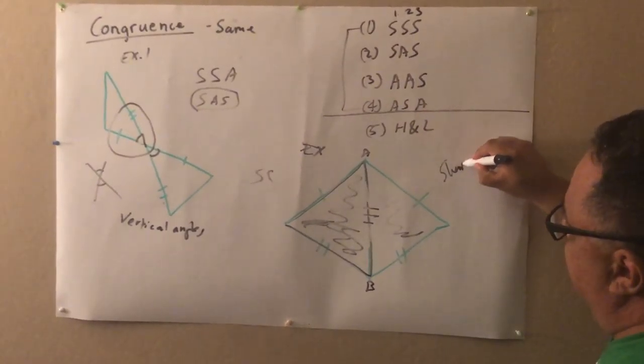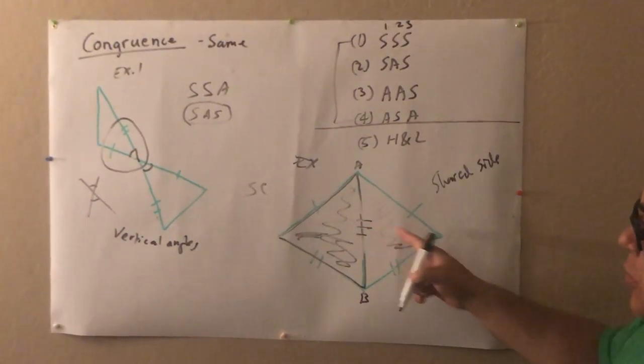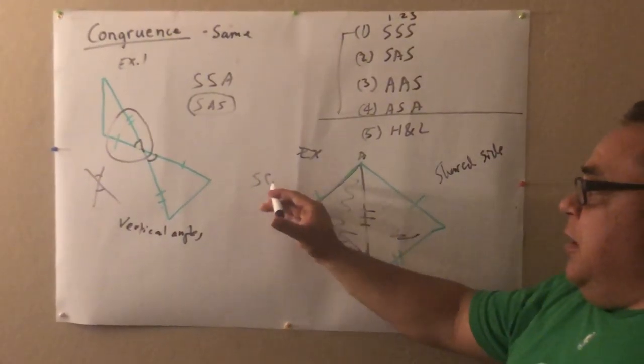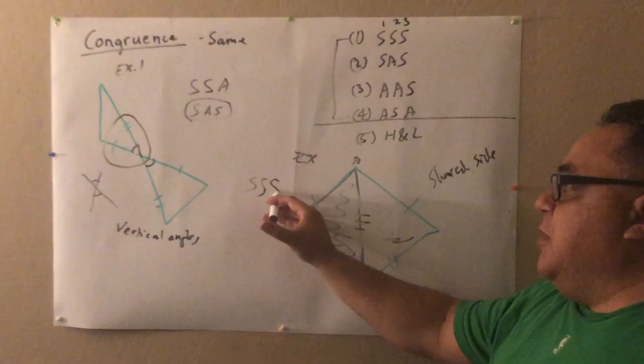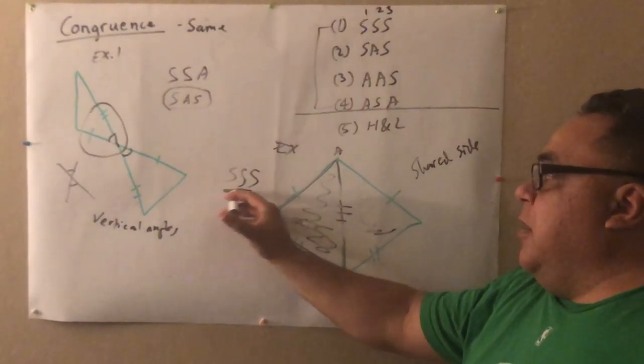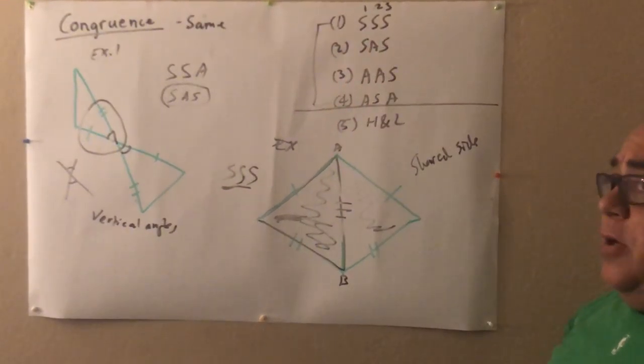Shared side. Anytime you see two triangles stuck together like that, there's a shared side and shared sides are congruent. So there's our S right there. We'd have SSS and that would be number one.